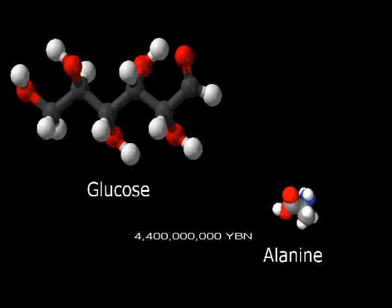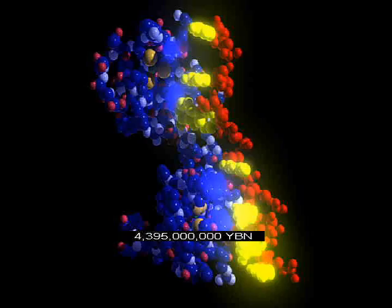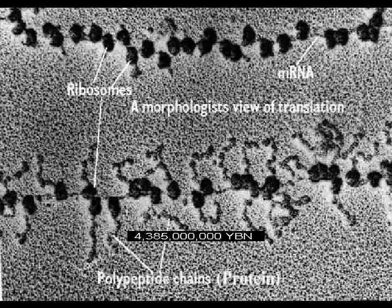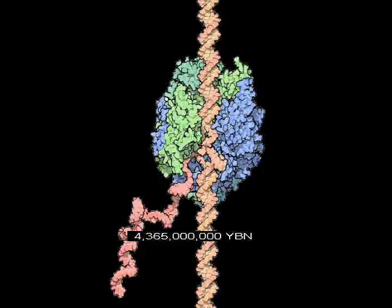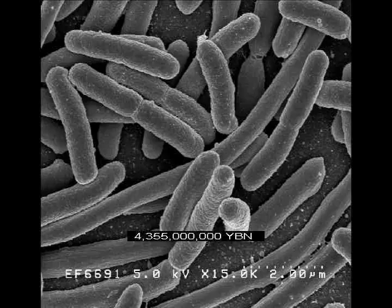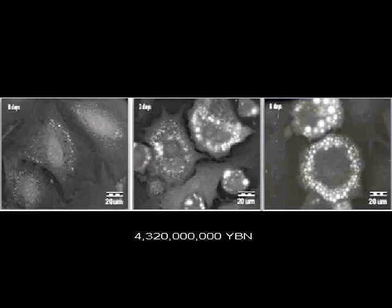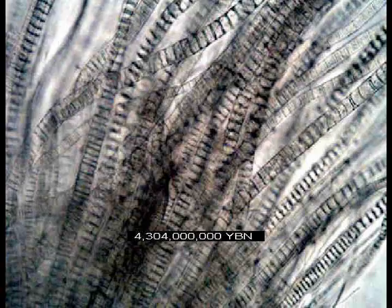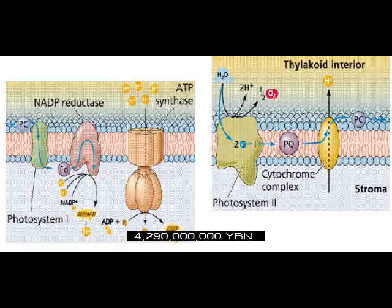Larger molecules form on Earth like amino acids and sugars. Nucleic acids form or arrive on Earth. RNA assembles amino acids into the first proteins. A protein copies nucleic acids. The first cell on Earth, a bacterium. DNA is surrounded by proteins. The first virus. Cells make lipids. Multicellular prokaryotes. Photosynthesis.